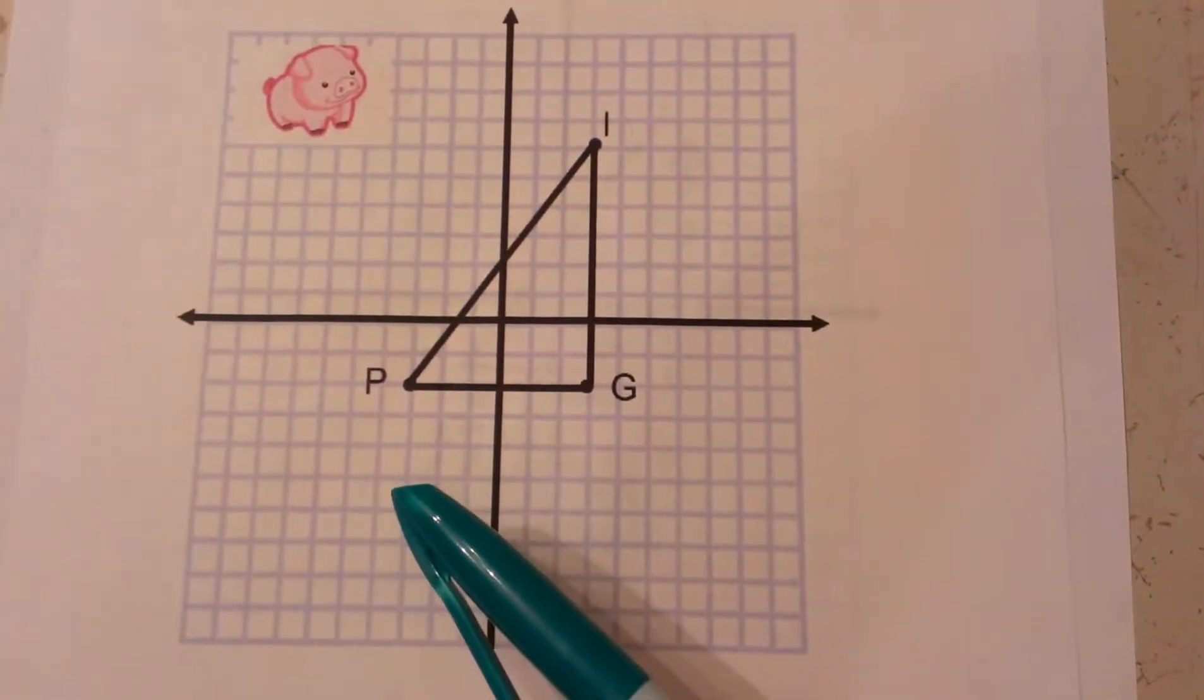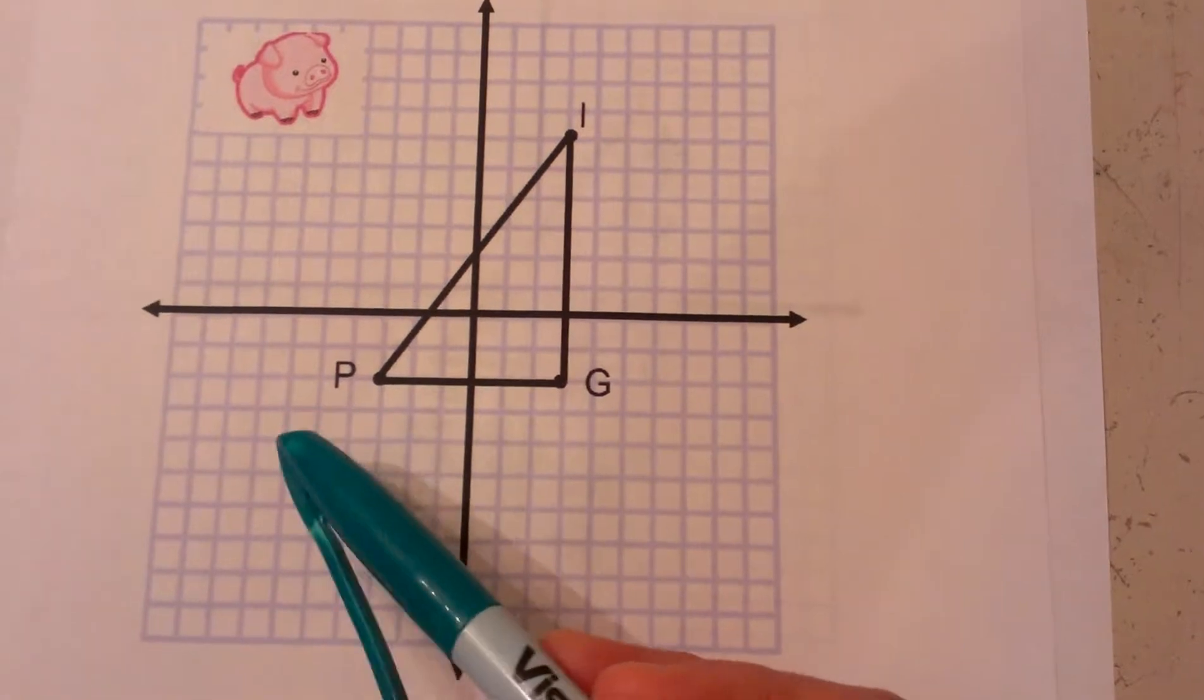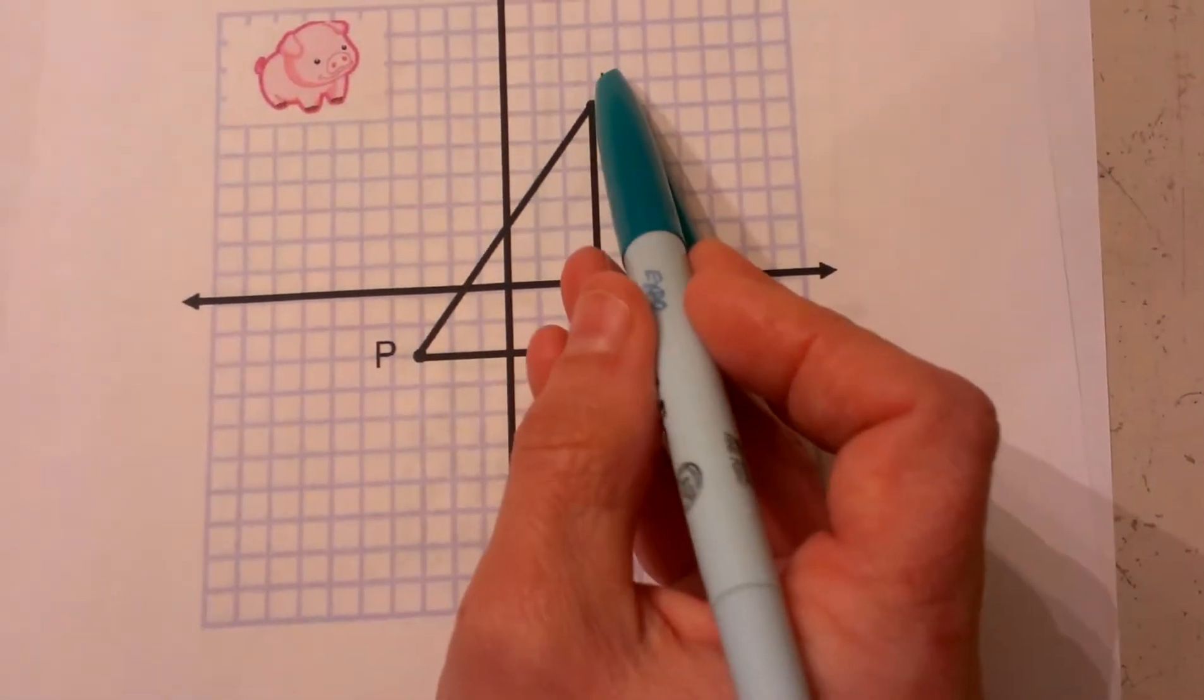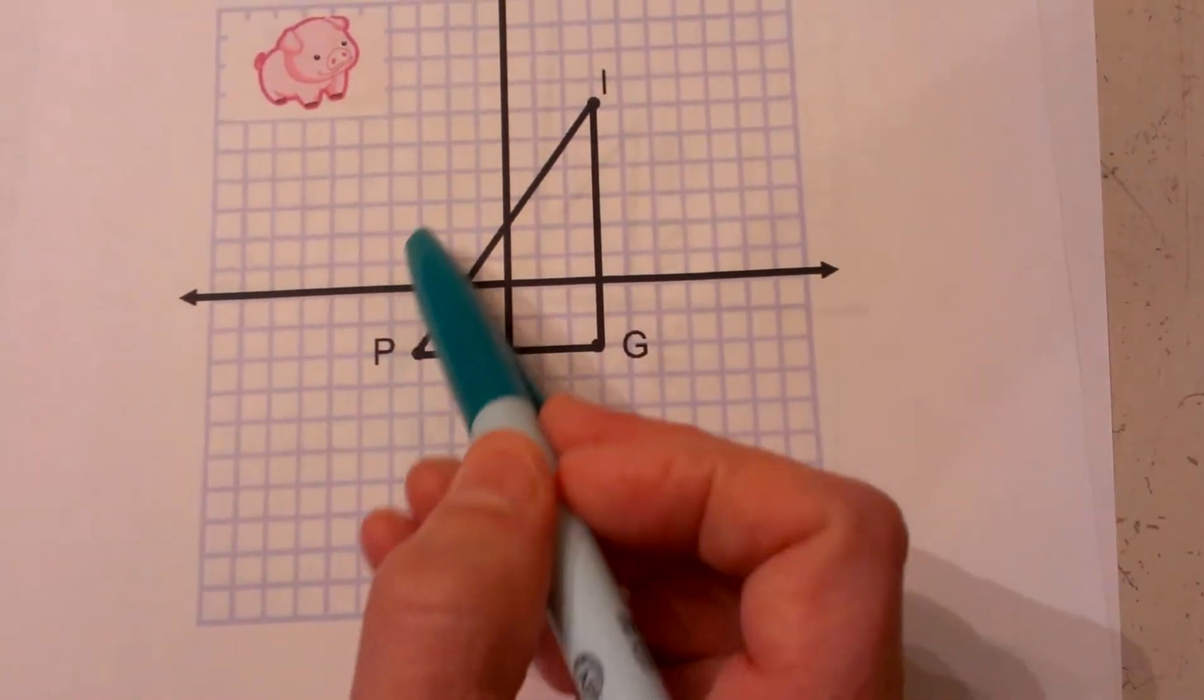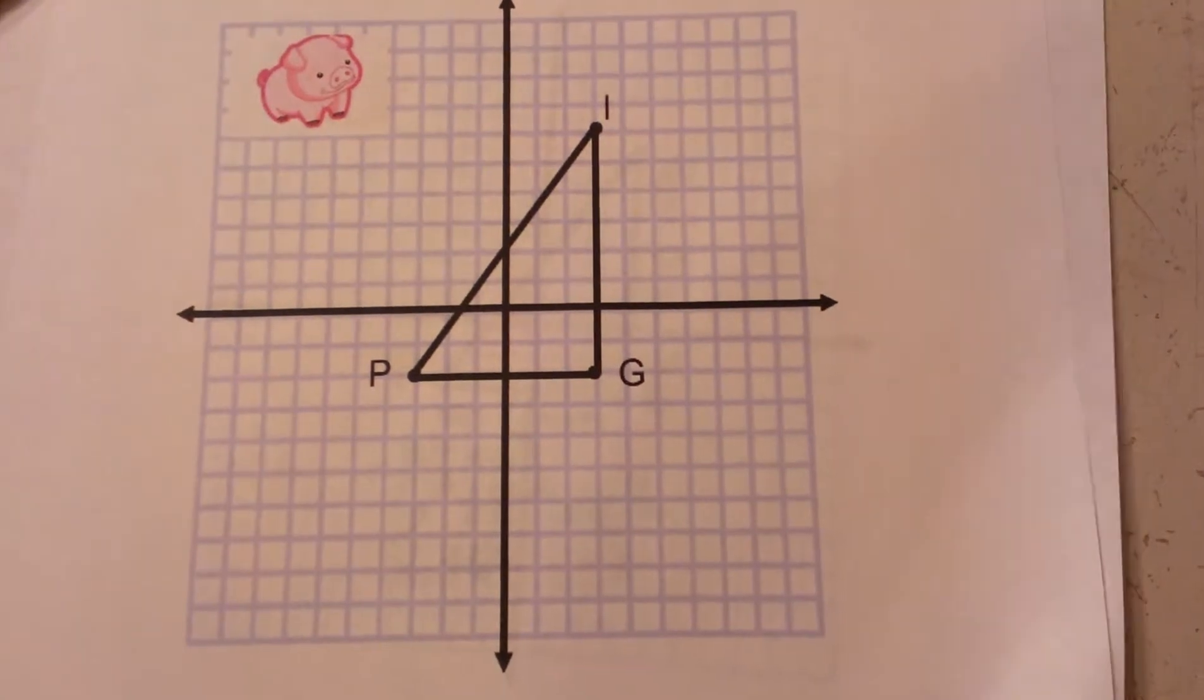I'm going to learn how to use the Pythagorean theorem to find distance because the distance formula is just the Pythagorean theorem. I have given you the triangle PIG and we are going to find not only the distance of each side but also the perimeter of PIG.